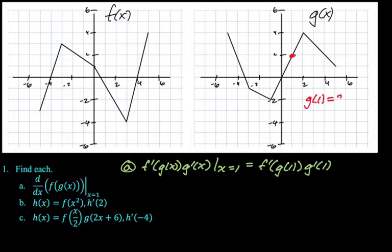Now I need to figure out what g(1) is. g(1) is definitely 2. I also need to know what g prime of 1 is. g prime of 1 is going to be the slope of that line segment. It goes up 2 and over 1, so the slope is 2.